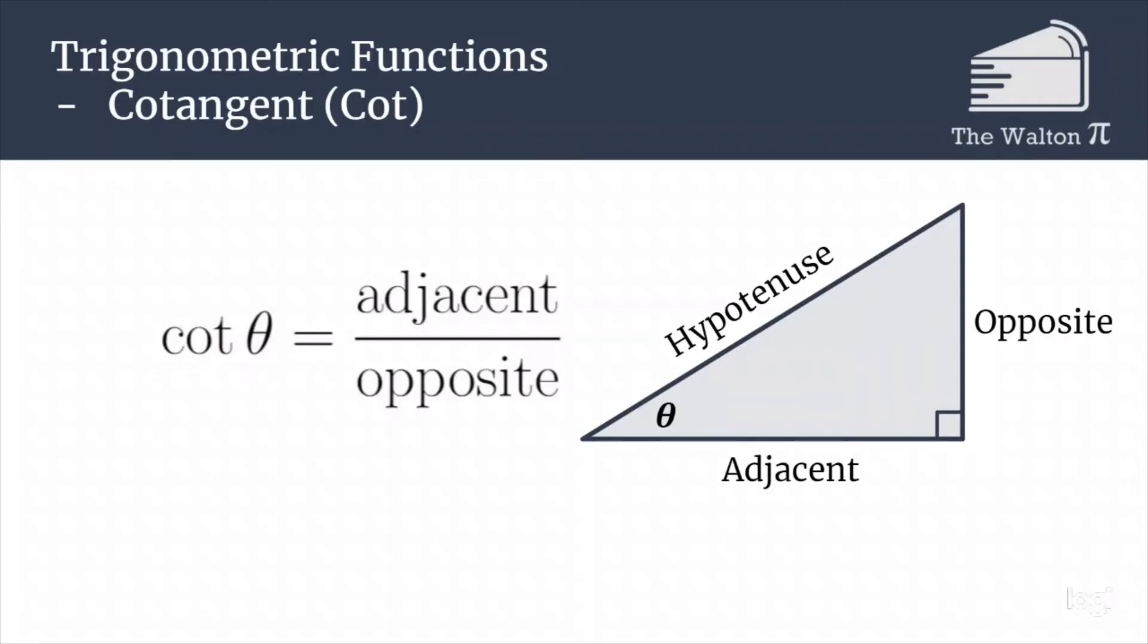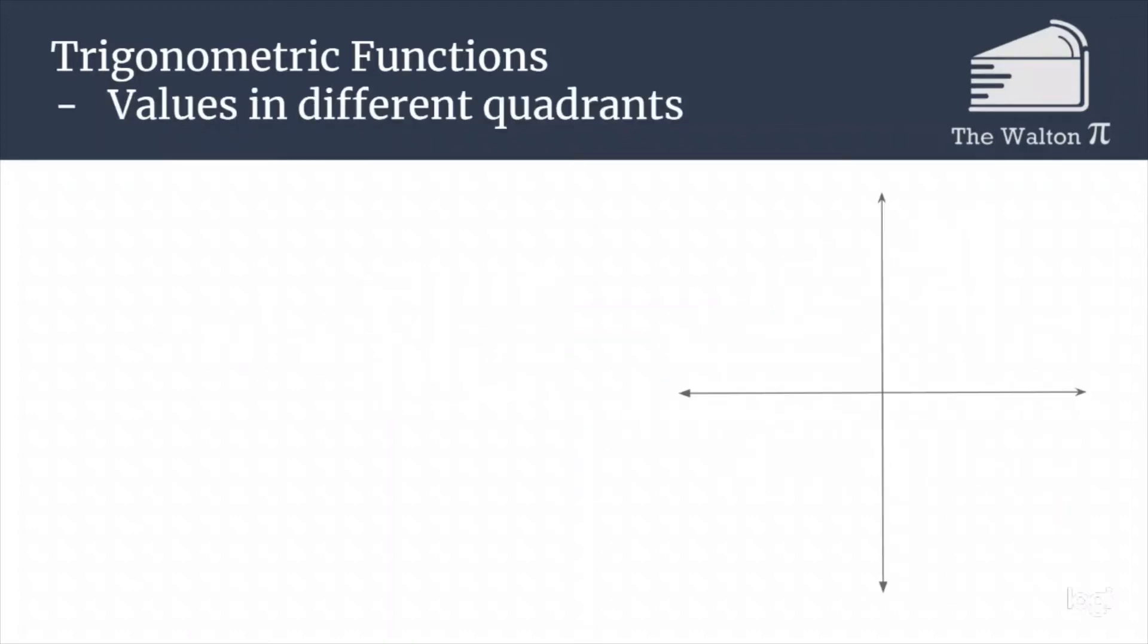These are for a right triangle assuming that the angle theta is in the first quadrant. These are the four different quadrants. The first quadrant is where both x and y are positive. The second quadrant is where x is negative but y is positive. Quadrant three is where both x and y are negative, and quadrant four is where x is positive but y is negative.